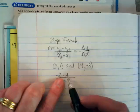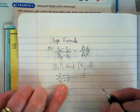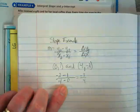What is negative 2 minus 1? Negative 3. And what is 4 minus 0? 4. So, this slope would be negative 3 over 4.